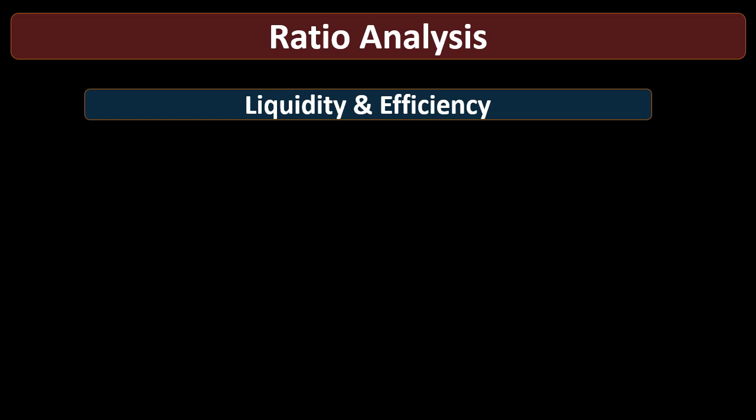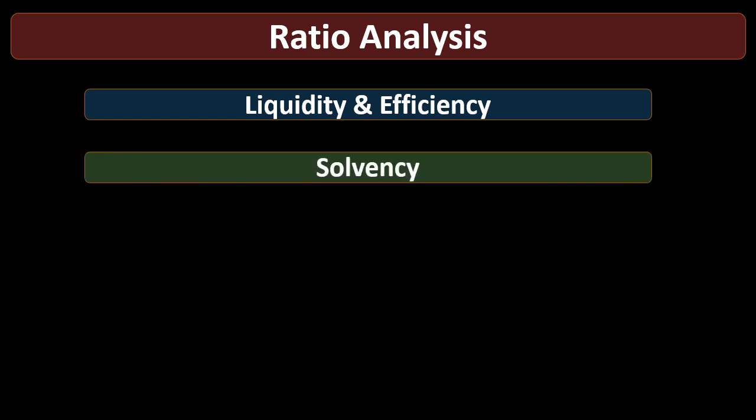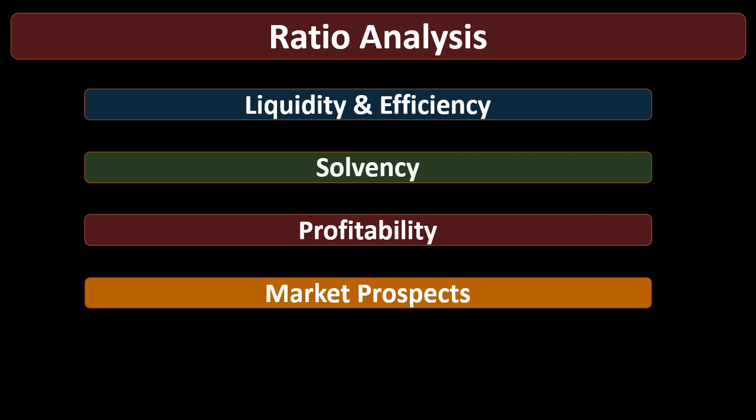Then we have ratio analysis. We break ratios out typically into four categories: liquidity and efficiency, solvency, profitability, and market prospects. Understanding these categories is important — we want to know what each ratio is there for and which category it belongs to. This is also a very common test question. In practice, the more you work with ratios and think about what each ratio is telling you, the better you understand them.